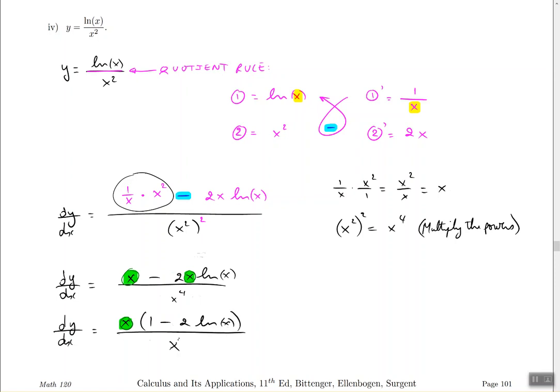And this gives me, so finally this will give me when I simplify it and reduce it to lowest terms, it will tell me that the derivative with respect to x is one minus 2 ln of x divided by x to the power of three.